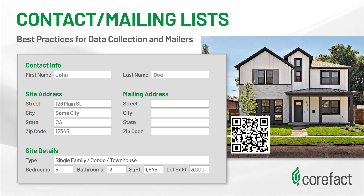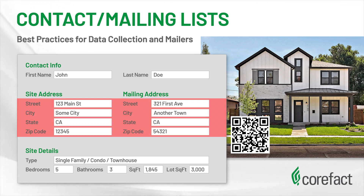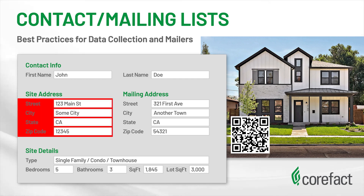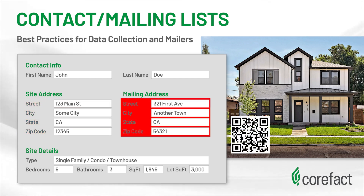Please note: if you're working with absentee owners where the homeowner's mailing address is different from their property address, both the site address and the mailing address sections need to be filled out. If both sections are filled out, CORFAC will use the site address information to generate the home evaluation QR code, and the mailing address will be used as the destination for the mailer.